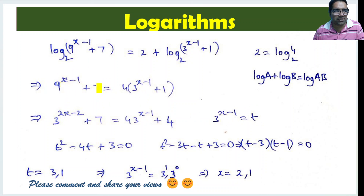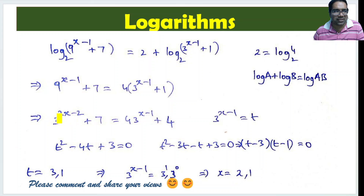So we get t² + 7 equals 4t + 4. That means t² minus 4t plus 3 equals 0.